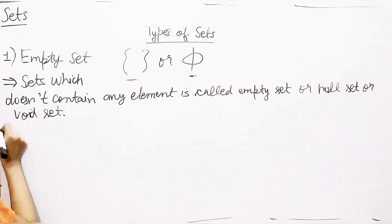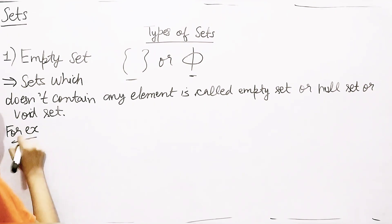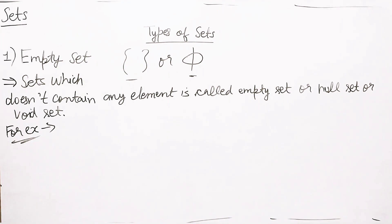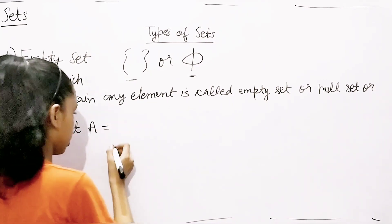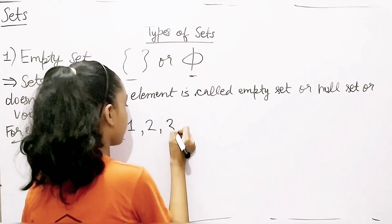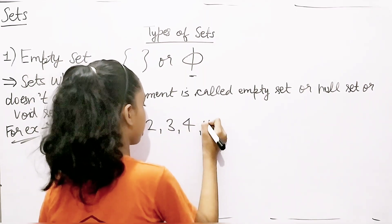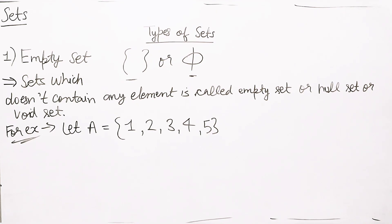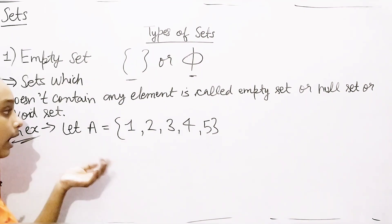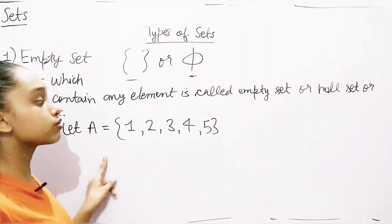Now let's take an example. Let set A equal the elements 1, 2, 3, 4, and 5 — that's in roster form. But I'm going to write it in set builder form, which will be more useful for solving questions. So A equals { x such that x belongs to natural numbers and x is less than 2 }.